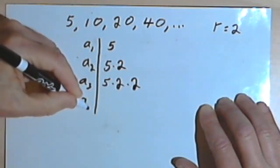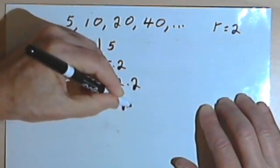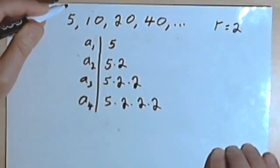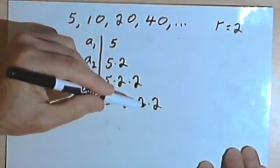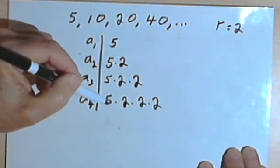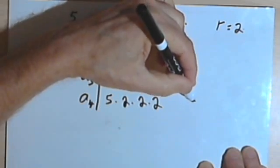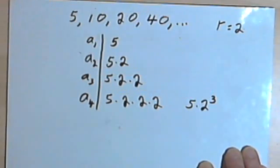In the same way, the fourth term, a sub 4, is going to be 5 times 2 times 2 times 2. Now instead of writing all of these 2s, I can use an exponent. So I can take that fourth term, 5 times 2 times 2 times 2, and write that more simply as 5 times 2 to the third power.